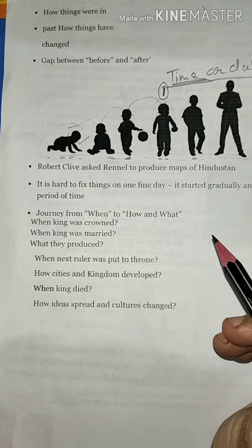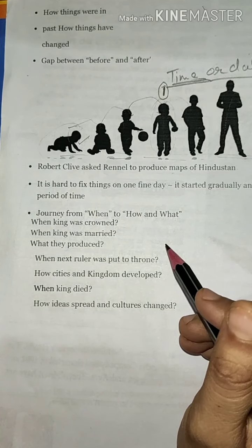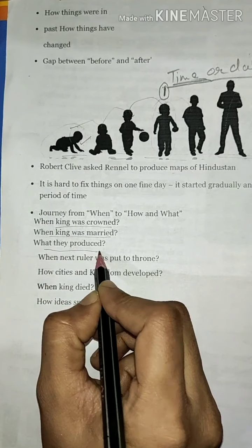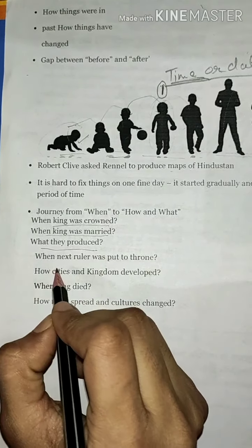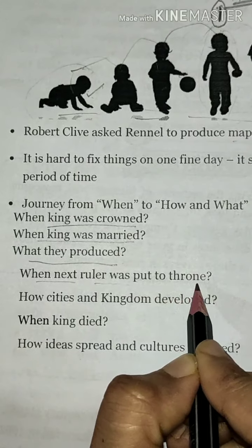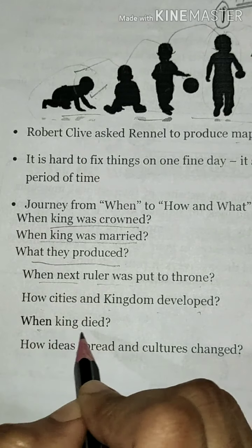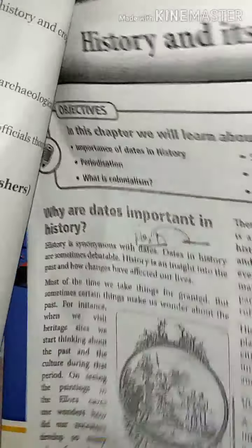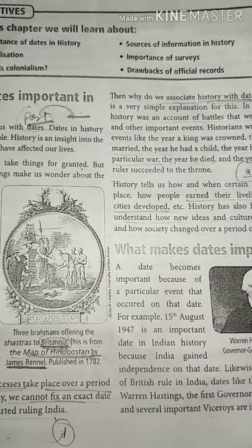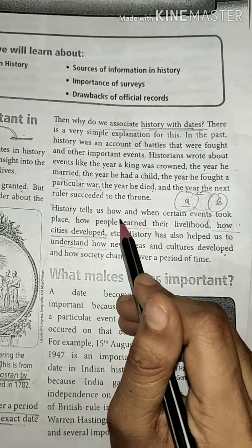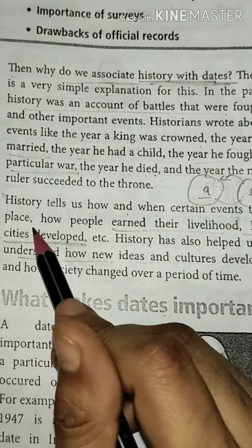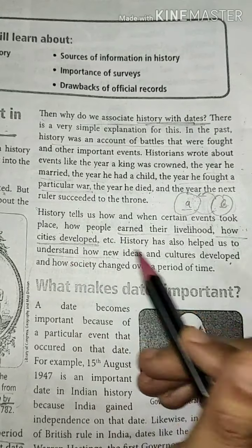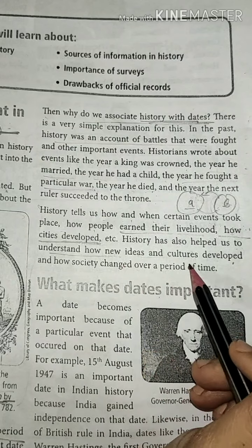We also saw why history is important. Because it gives the answers to questions like when a king was crowned, when the king was married, what they produced, when the next ruler was put to the throne, how cities and kingdoms developed, when kings died, and how ideas spread in culture. History tells us how and when certain events took place — कोई भी event कब और कैसे होता है — and how people earned their livelihood and how cities develop. History also helps us understand how new ideas and culture develop.